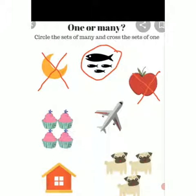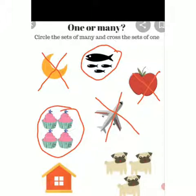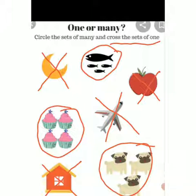Now next — what is this? Ice cream. Yes — so circle this one. Now this is aeroplane — one or many? One. So cross them. Now this is a house — one or more? One. So cross, because the question says cross the sets of one. How many puppies here? One, two, three. So circle this one. Understood this worksheet number two?